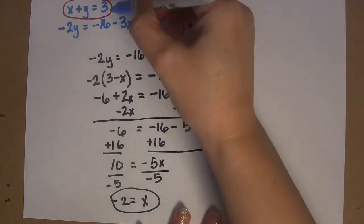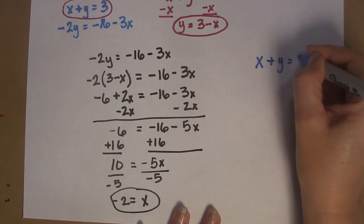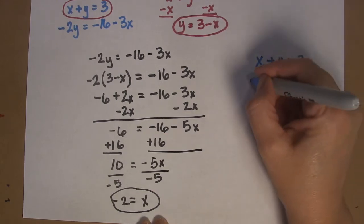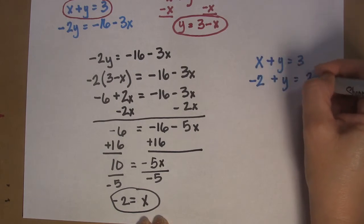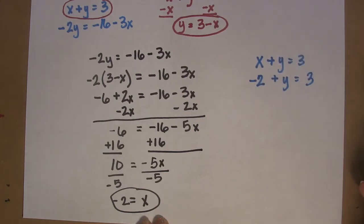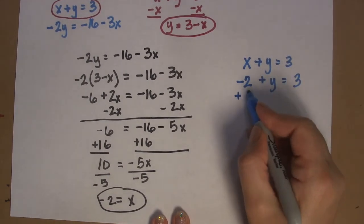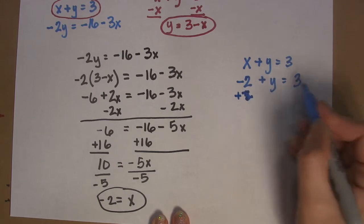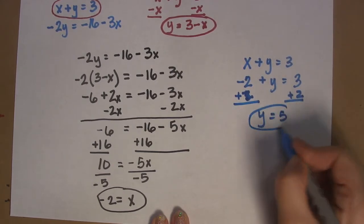So now I can go back to that first equation. x plus y equals 3. And now I can put in negative 2 for x. So it's negative 2 plus y equals 3. To solve, I'm going to add 2 to both sides. So I get y equals 5.